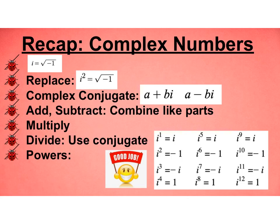And just to recap, i itself is equal to the square root of -1. i² is not that, i² is -1. And we don't want to leave i² in any problems, so we want to make sure we are substituting that in. The complex conjugate is a + bi and a - bi. When you add or subtract, you combine like terms. Multiply, just don't leave an i². Division, you use the conjugate. And then you have your powers which follow a pattern of 4. Good job.